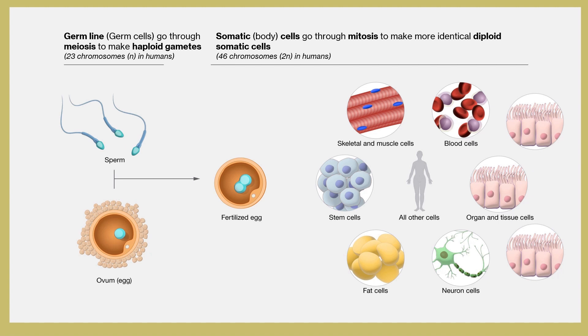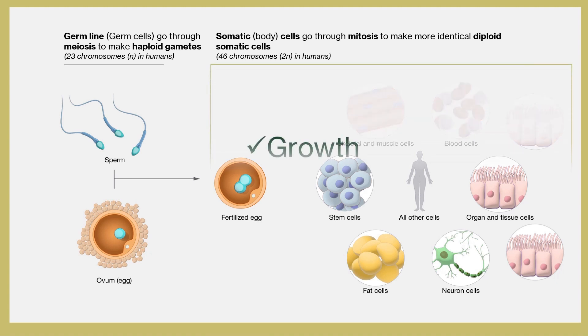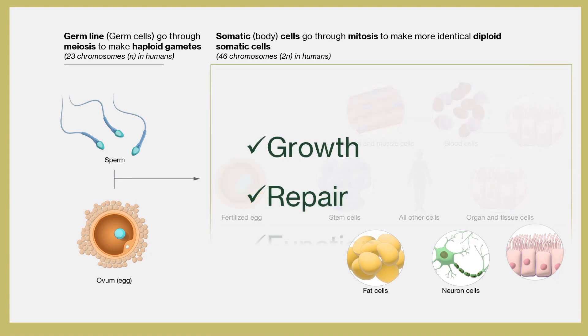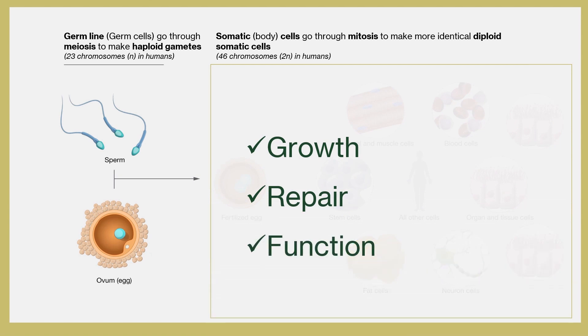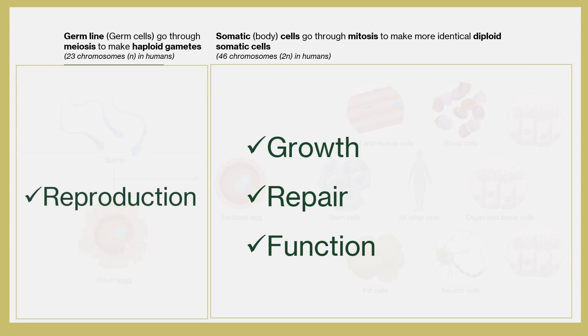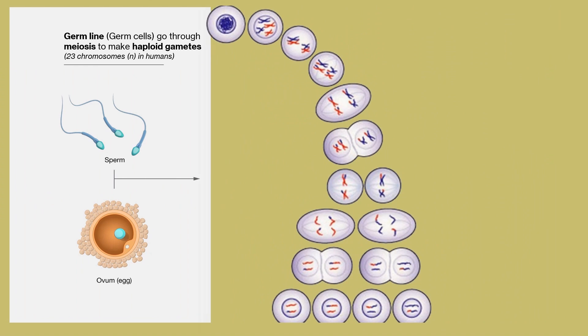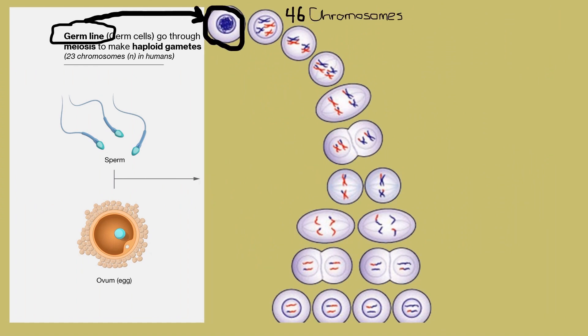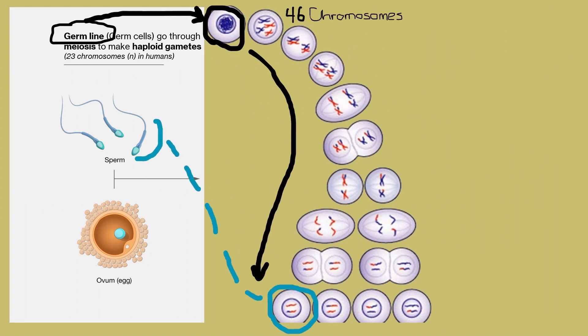This distinction is crucial because somatic cells' primary role is to contribute to the growth and repair of the body, maintaining the organism's overall function. Somatic cells go through mitosis because we want tissues and organs to produce identical cells — a stomach cell should produce more stomach cells. In contrast, germ cells have a unique role in reproduction. When germ cells undergo meiosis, they reduce their chromosome number by half, producing haploid gametes — going from diploid to haploid.